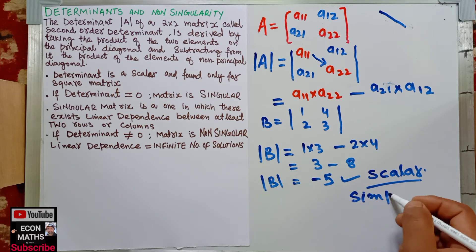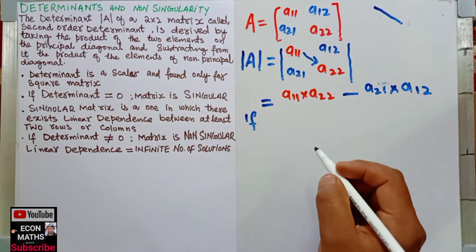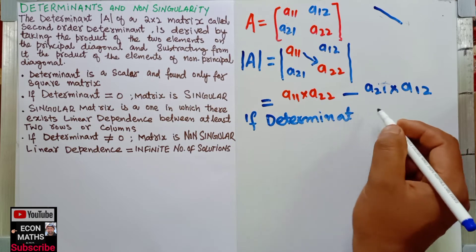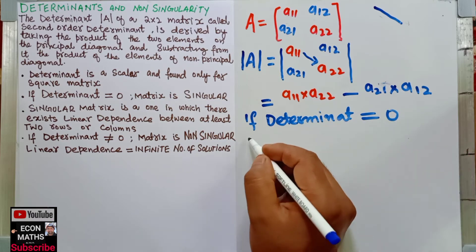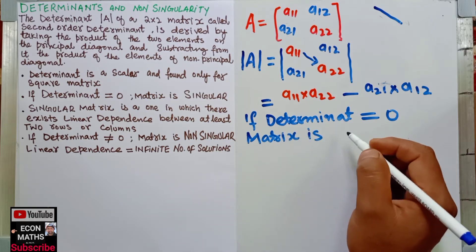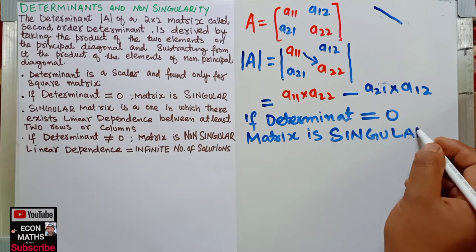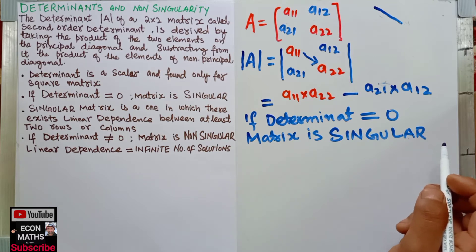If the value of the determinant is zero, we say the matrix is singular. A singular matrix is one in which there exists linear dependence between at least two rows or columns.